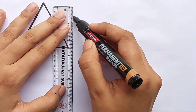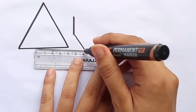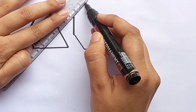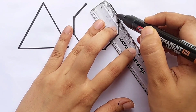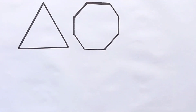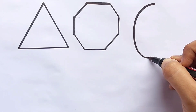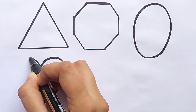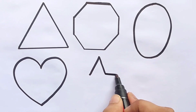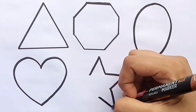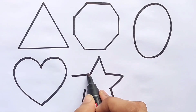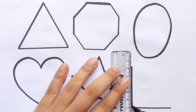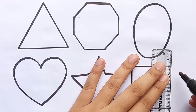Triangle. Octagon. Oval. Heart. Star. Square.